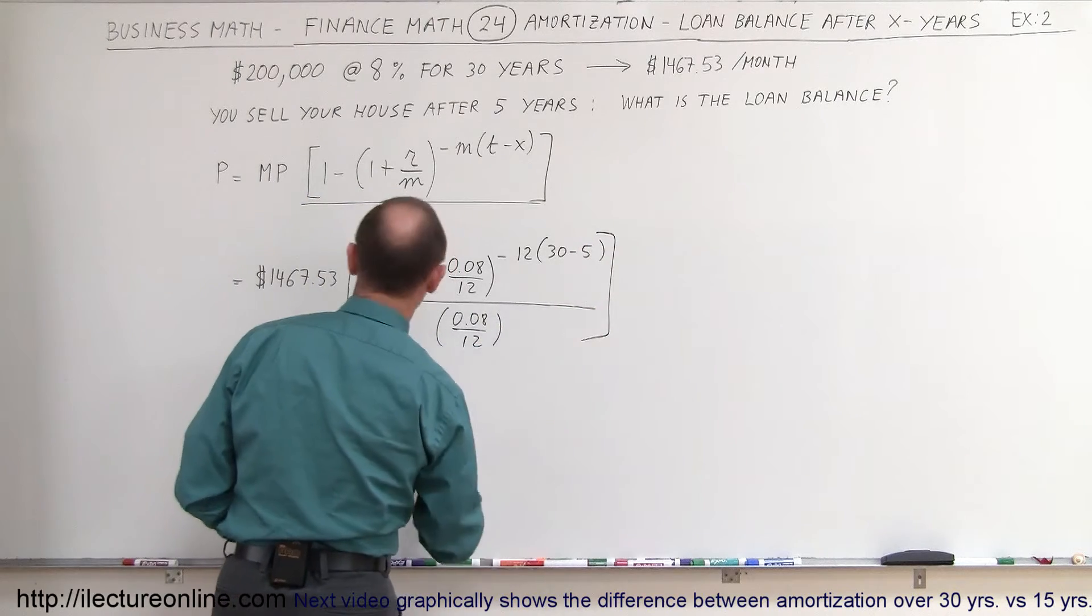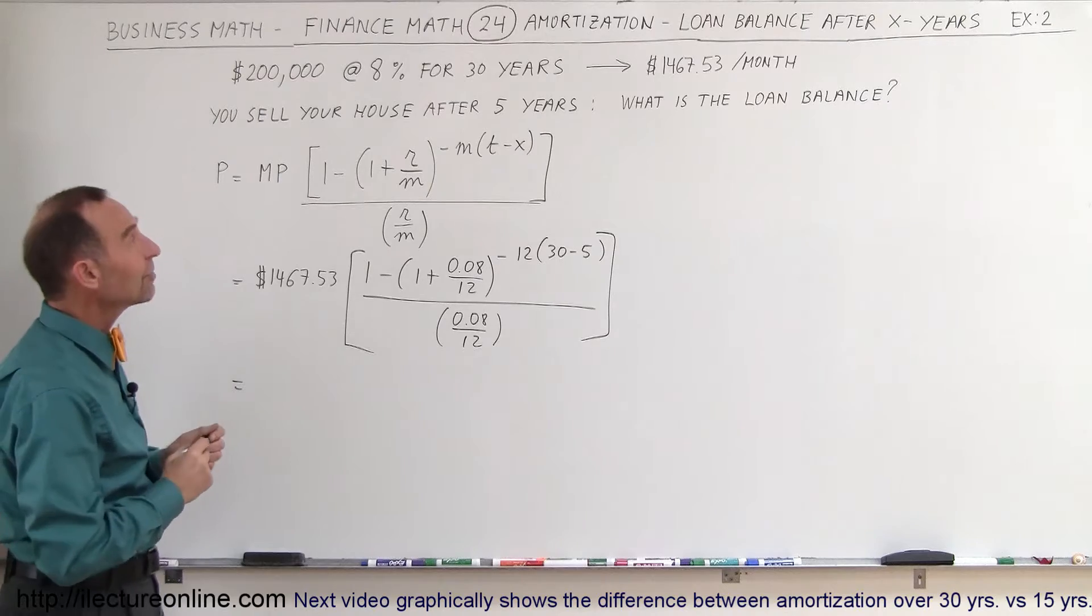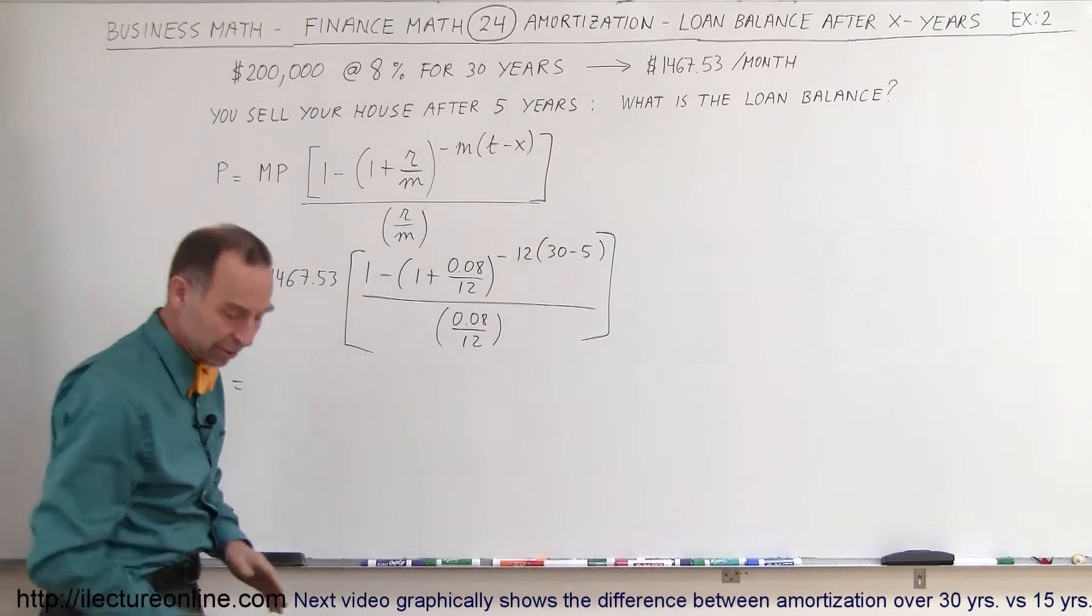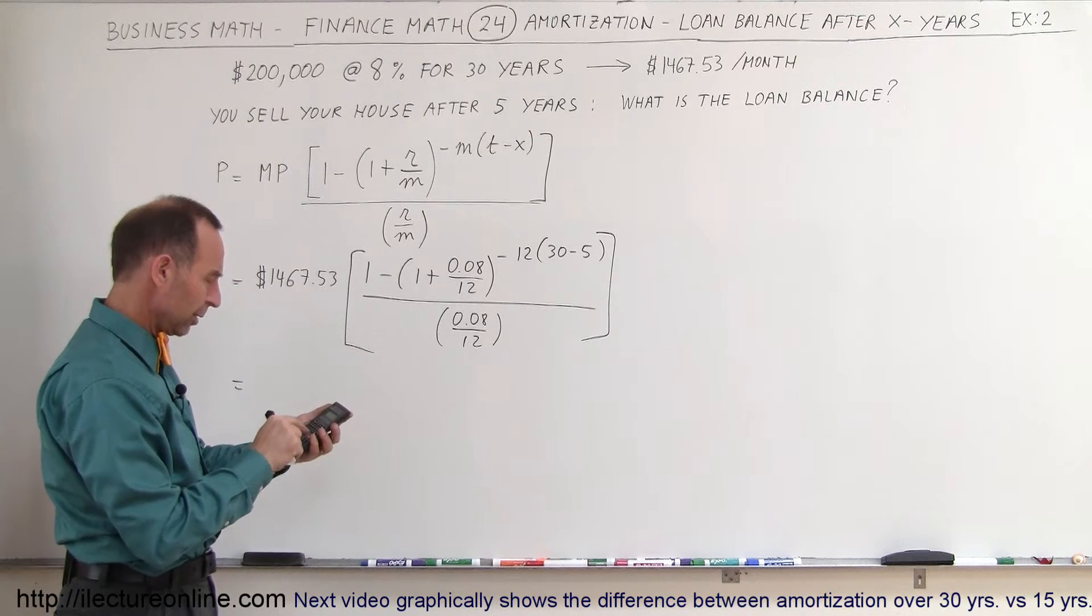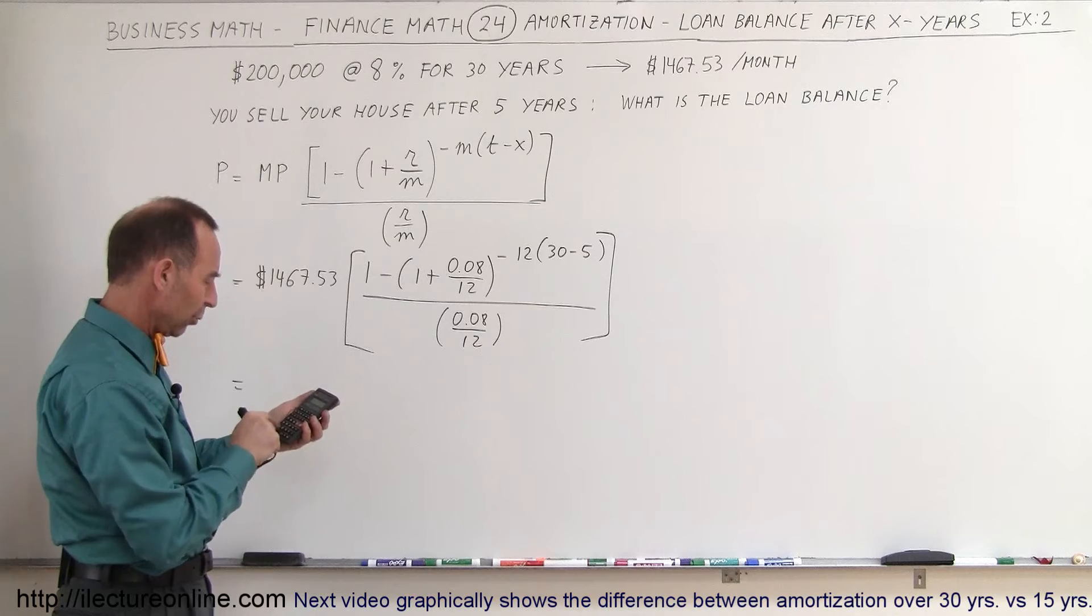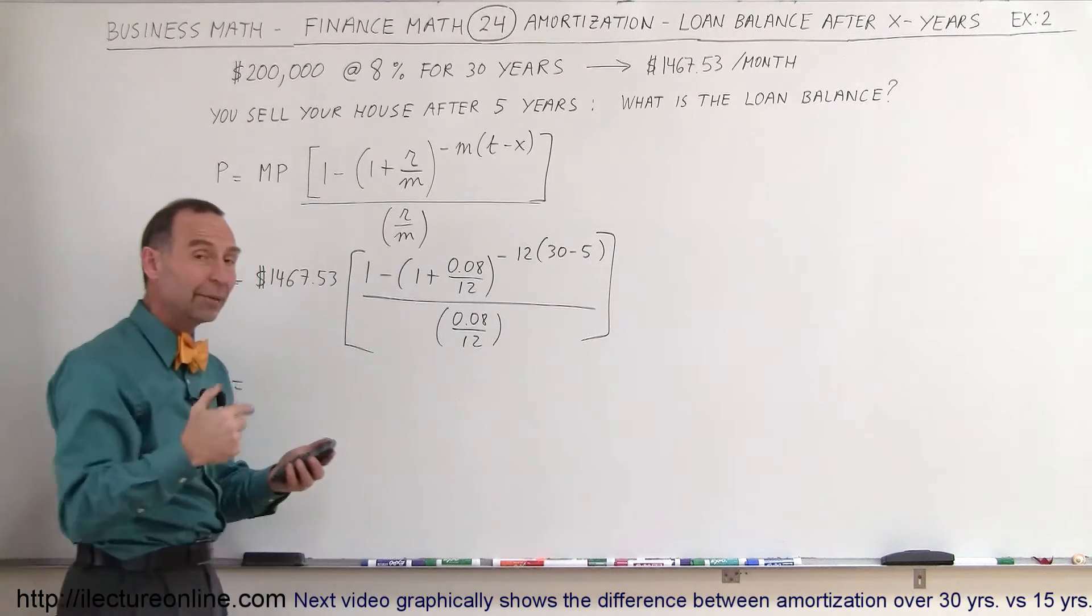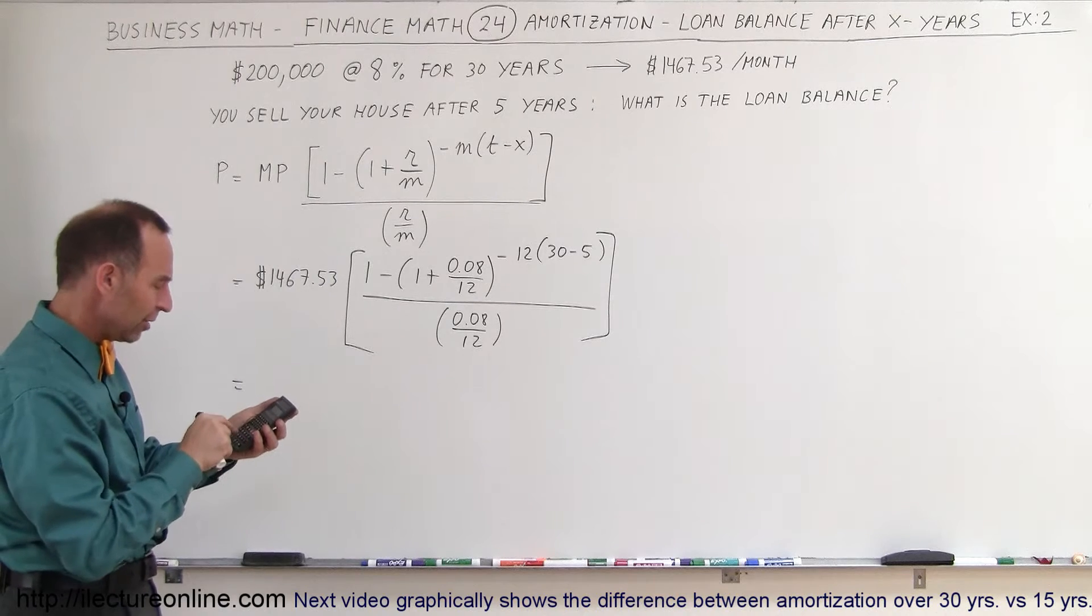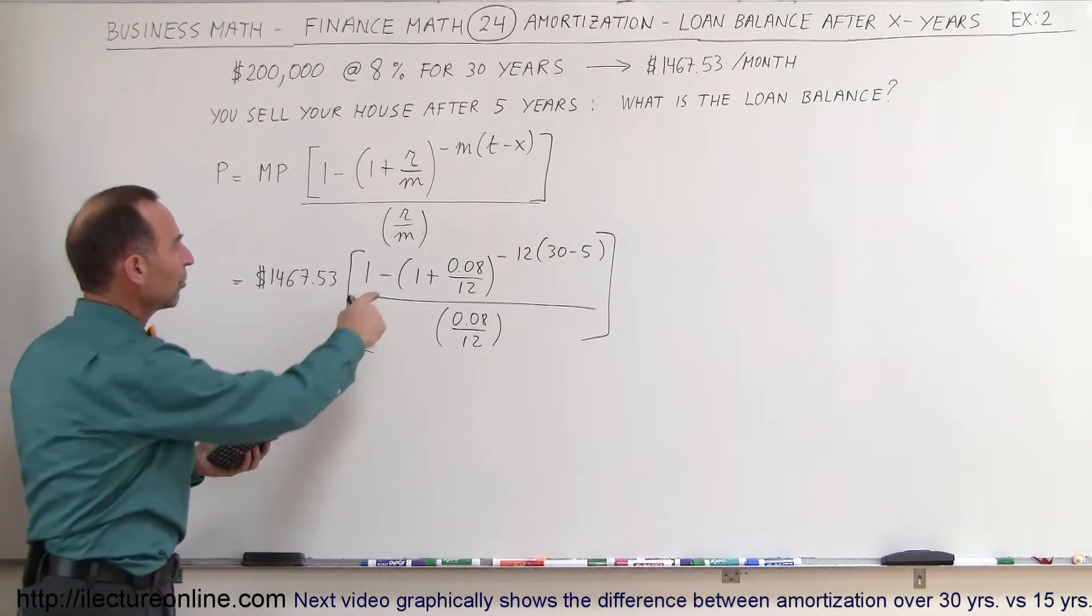And we'll close the bracket. So let's see what the principal remaining is after five years of making those large payments. So again, starting from here, we go 0.08 divided by 12 plus 1. We're going to raise that to 12 times 25 with a minus, so that would be raised to the minus 300 power. And then we subtract it from 1.